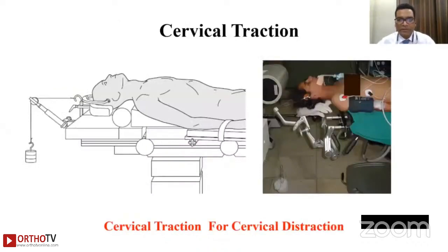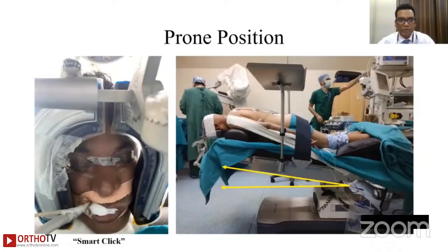In a few conditions like cervical facet dislocations, cervical deformity, and cervical corpectomies, we need cervical traction. In the prone position, we usually use a 'smart click' — you can use your mobile phone in selfie mode and take a picture of the patient during prone positioning to make sure there is no pressure on the eyes.